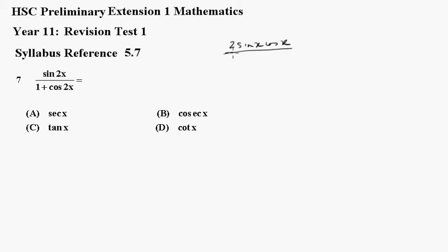Now we need to get rid of that 1, so I'm going to rewrite cos 2x as equal to 2 cos squared x minus 1. So that's 1 plus 2 cos squared x minus 1.